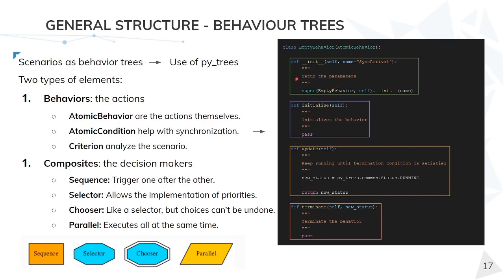As always, first of all, an initialization, which must call its parent class. Then the initialize function, which is run once when the behavior becomes active. An update function, which is run on each tick that this behavior is active. And a terminate, which is run once after the behavior stops running.